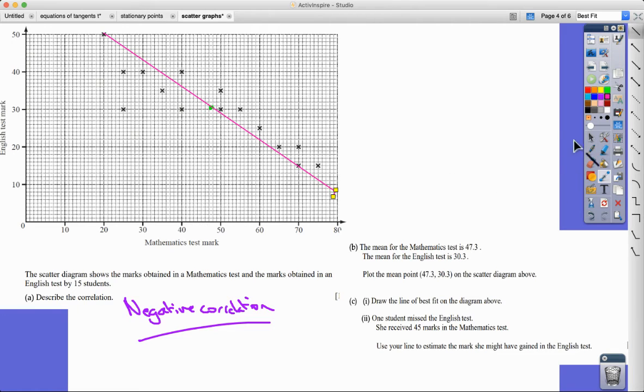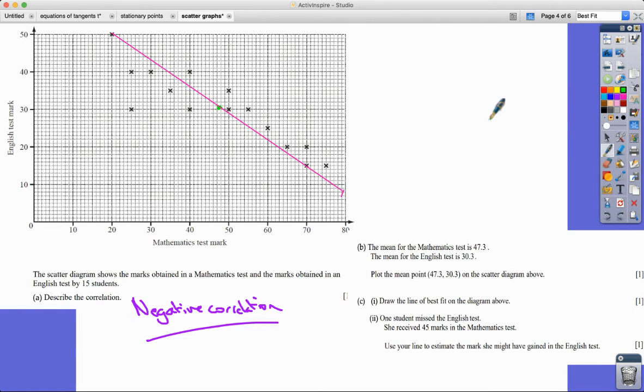And then one student missed the English test. We can actually use this line of best fit now for estimation purposes. So it says one student missed the English test, however we do know that they got 45 marks in the maths test. So using the trend line or the line of best fit, based on their classmates—the other 15 students in the class—we can use the line to estimate the mark she might have gained in the English test.